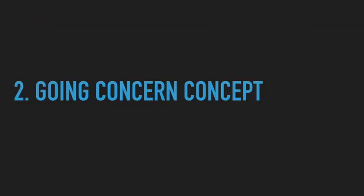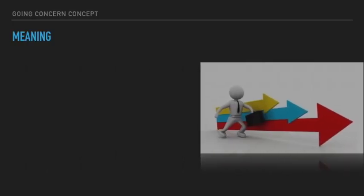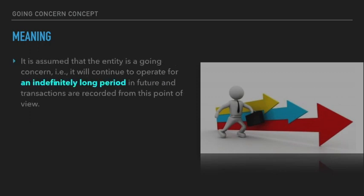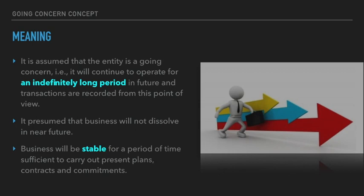The second concept is the going concern concept. Going concern concept means our business will go on forever, for an indefinitely long period in the future. When we start our business, we think that we won't shut it down quickly. We assume our business will keep running for the long term — for infinite years, which we can't calculate — so that we can fulfill our present plans, contracts, and commitments.